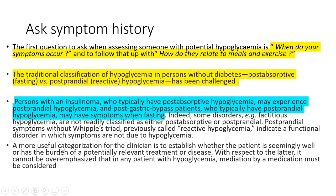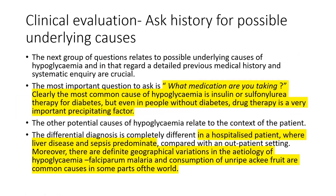A more useful categorization for the clinician is to establish whether the patient is seemingly well or has the burden of a potentially relevant treatment or disease. It cannot be overemphasized that in any patient with hypoglycemia, medication as a cause must be considered. This classification is advised in the Endocrine Society guidelines as well as in the Williams Textbook of Endocrinology.